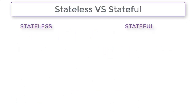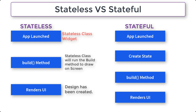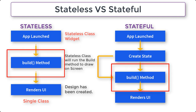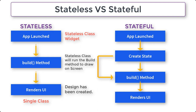To understand stateful widgets, let's see the difference between stateless and stateful widgets. Stateless widgets don't allow the user to interact with the application. They draw on the screen when the application launches and even after user interaction they don't let the user change the state or design of the screen. In stateless widgets we have one single class that extends the stateless widget and returns a build method. This build method draws the design on the screen.